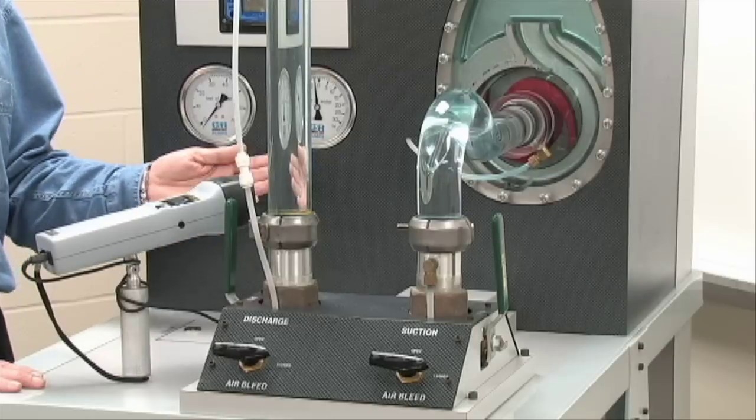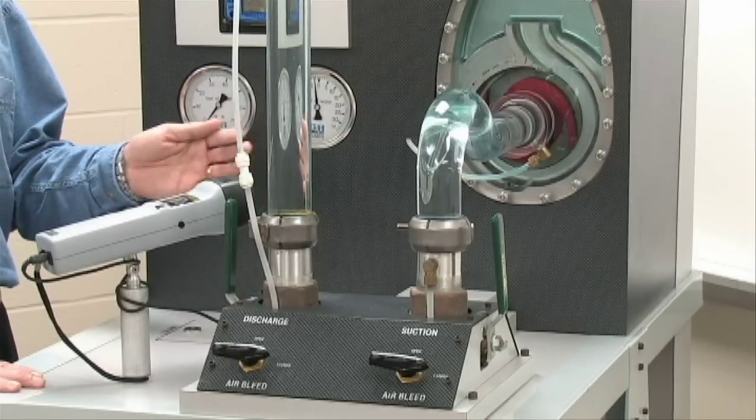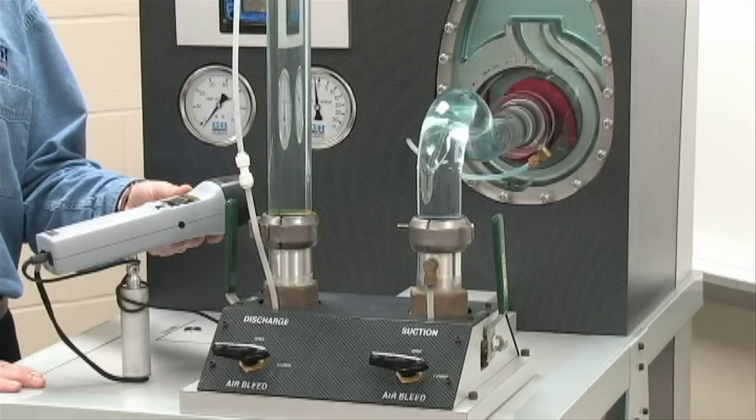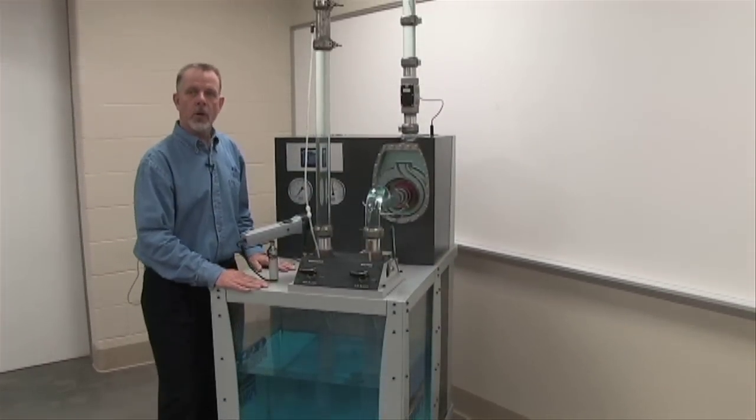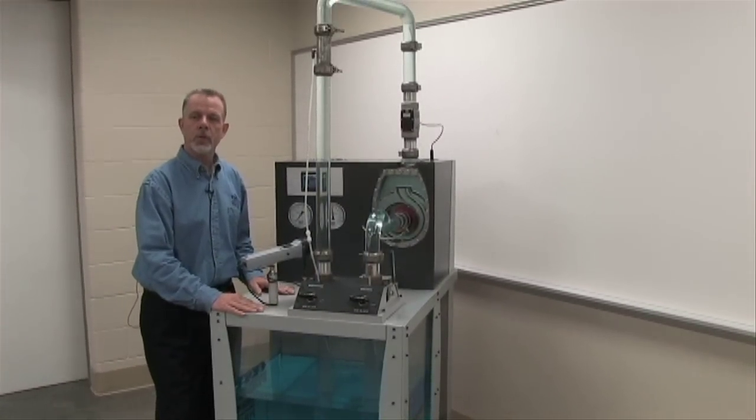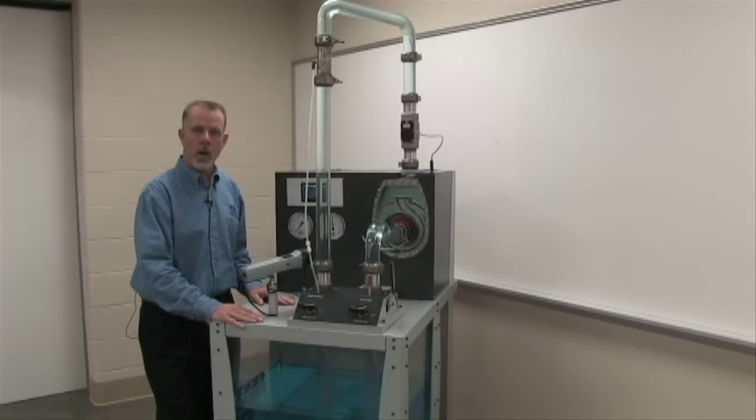With the speed of the pump and with gauge readings, we can then plot condition points on a curve and troubleshoot accordingly. Let's go ahead and get started with the subject of our video in priming.